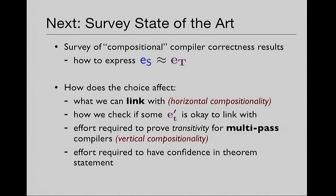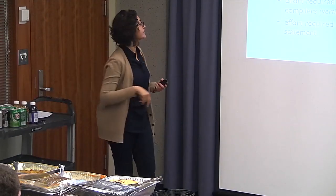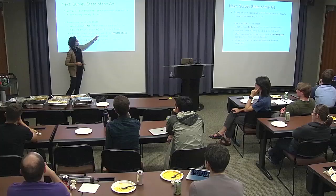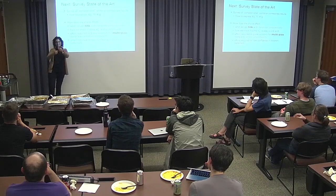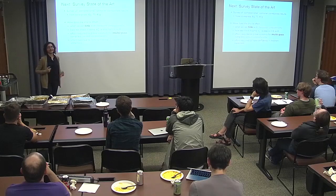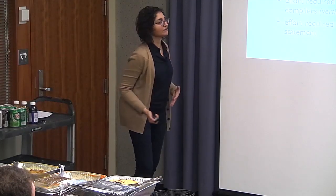There's also the issue of multi-pass compilers. If you have a multi-pass compiler going from source to intermediate to target, you want to verify each pass and then put the correctness results together to get end-to-end source-to-target compiler correctness. That's essentially a transitivity property — correctness of each pass implies correctness of the whole end-to-end. This transitivity needed for multi-pass compiler correctness is often referred to as vertical compositionality. These ideas are conflated in the literature right now and I'll make a point that maybe they shouldn't be.